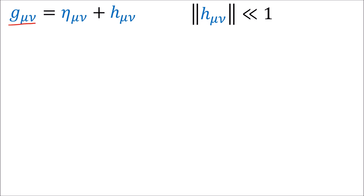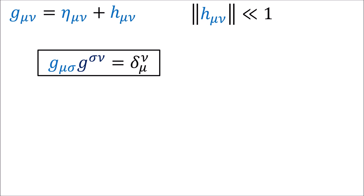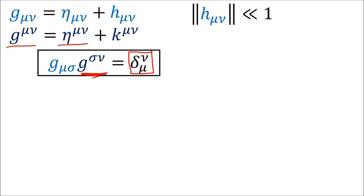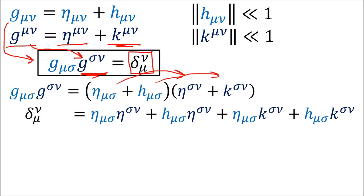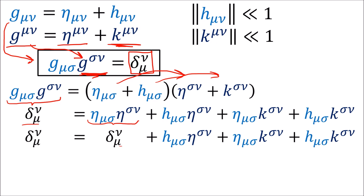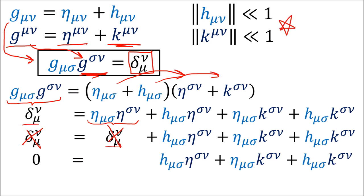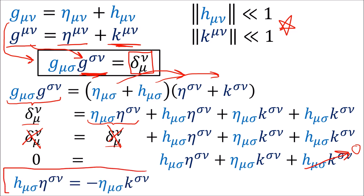We know the metric g with lower indices is the Minkowski metric eta plus a small change h. The inverse metric with upper indices is basically the matrix inverse of the metric, which gives the 4x4 identity matrix, or Kronecker delta, when we multiply the metric and inverse metric together in a summation. We can assume the inverse metric g is the inverse Minkowski metric with upper indices plus a different small change k with upper indices. If we plug these in and distribute, we can replace the summations with Kronecker deltas and cancel them. Since the components of both h and k are small, their product is extremely small, so we can ignore it. This leaves us with h eta inverse equaling negative eta k.